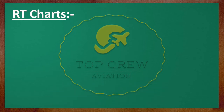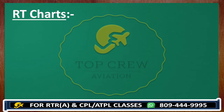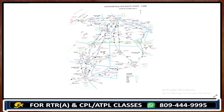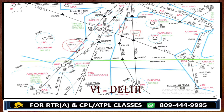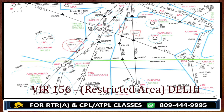Now we would look at what are these kinds of areas in chart number one. Look over here — this is VIR156. So how do we represent them? It would be a triangle or in any other shape with a red color boundary. VI means it belongs to Delhi, so VIR156 means restricted area of Delhi.